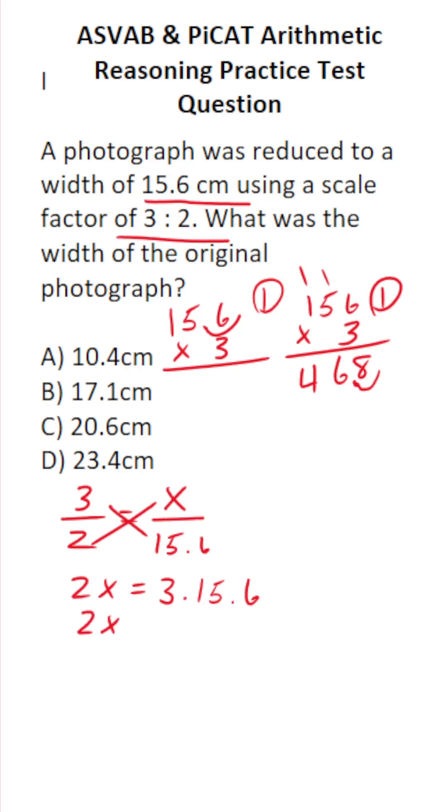This says 2x equals 46.8. We just want x, so we're going to divide both sides by two. This crosses out. This says x equals 46.8 divided by two.